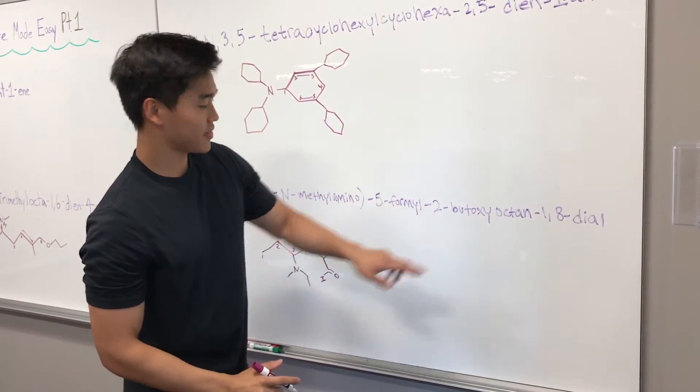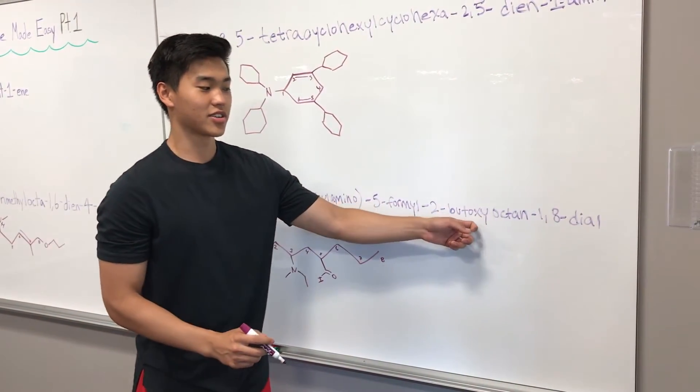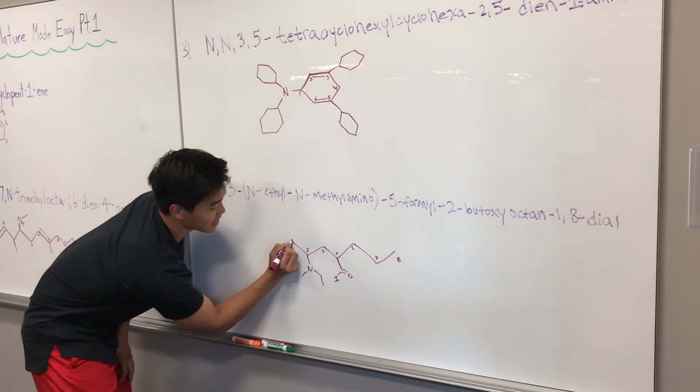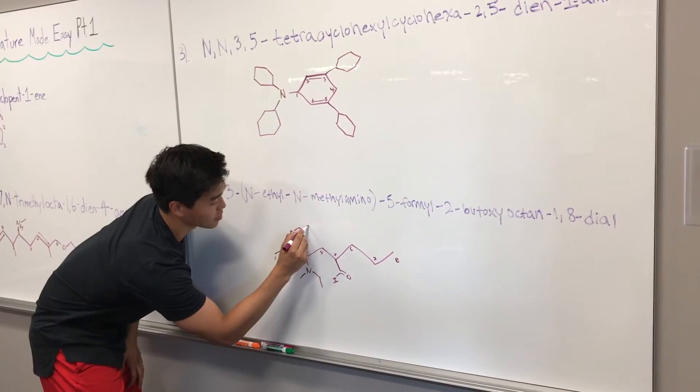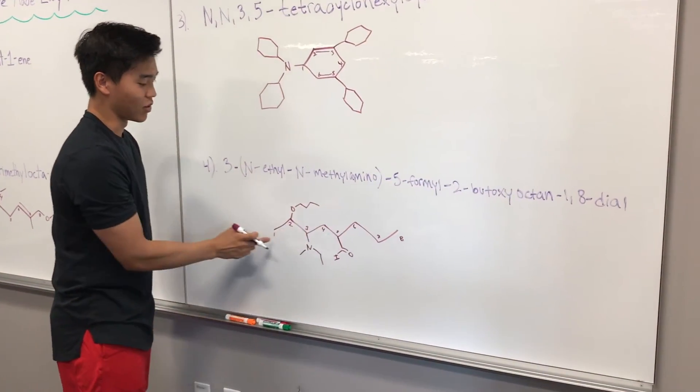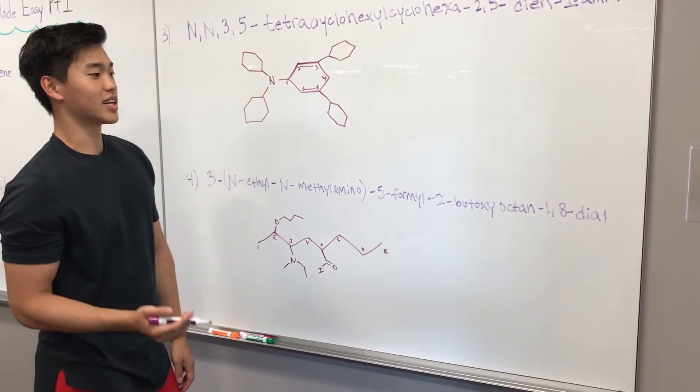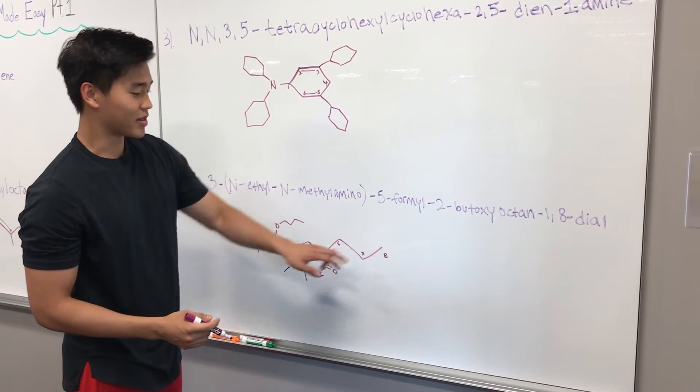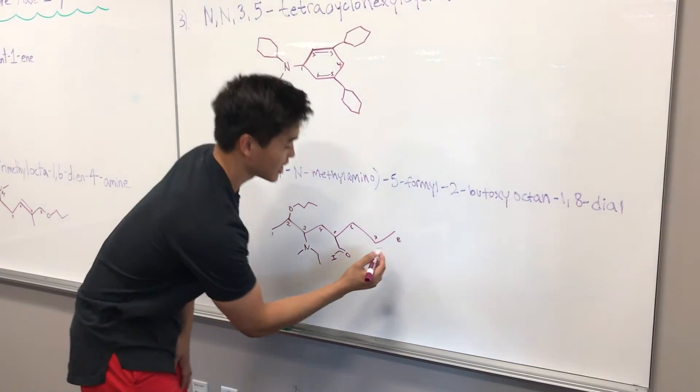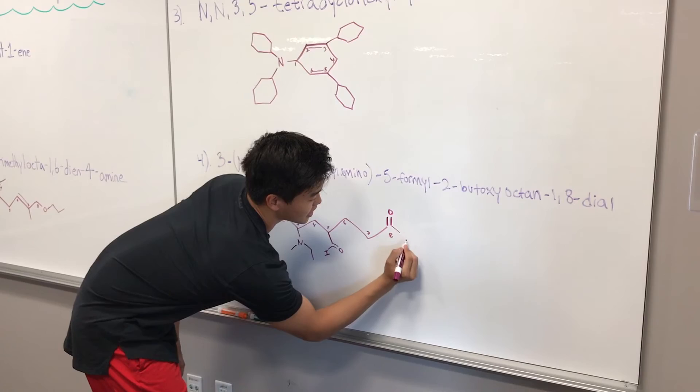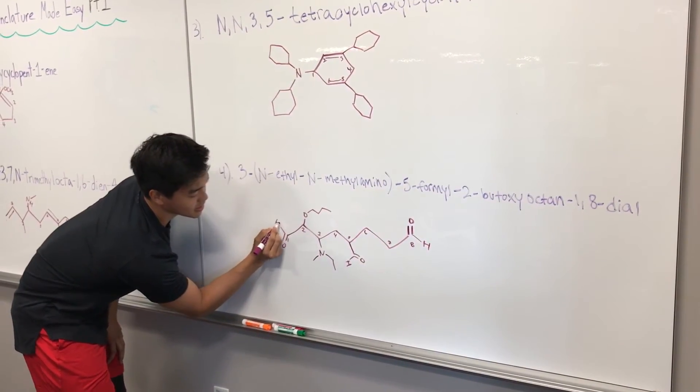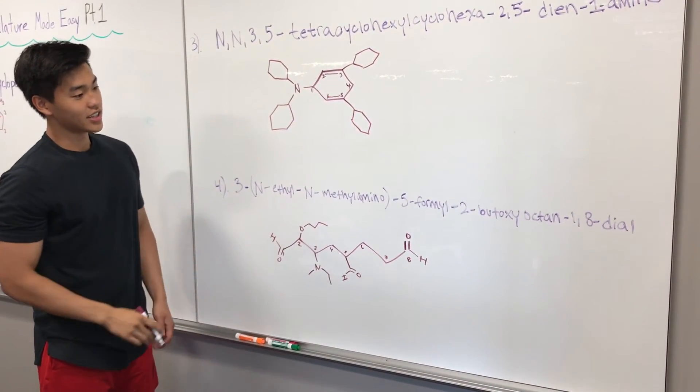And so moving down the line, we have 5-formyl. So off of carbon five, we're going to have a formyl group, which is an aldehyde. And so we'll have our carbon with the carbonyl group and hydrogen. And then 2-butoxy. So off carbon two, we're going to have a butoxy group. Oxy for oxygen, and but for the butane. And so we'll have oxygen, and then meth-eth-prop-but. And then 1,8-diol for the highest priority group. So off carbon eight and one, we're going to have an alcohol. But because it's the highest priority, these carbons are going to be represented in this alcohol as well. So we're not drawing an extra full aldehyde functional group. So we're just going to add on our double bond O, our H to eight, and our double bond O and H to carbon one. And so this is the final answer.